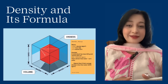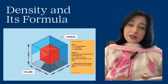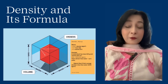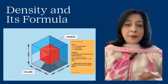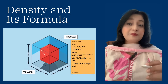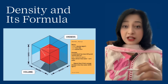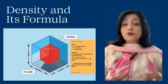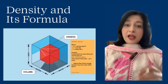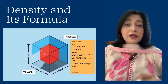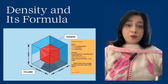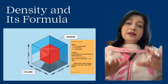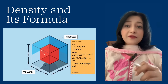Now the topic is density. Density tells us how much mass is packed into a given volume. The symbol is ρ (rho), and it equals mass divided by volume: ρ = m/V, where density is in kg per meter cubed, m is the mass and V is the volume. For example, a metal block has mass 400 grams and volume 100 cm³, so ρ = 4 g/cm³. That's denser than water, so it sinks.